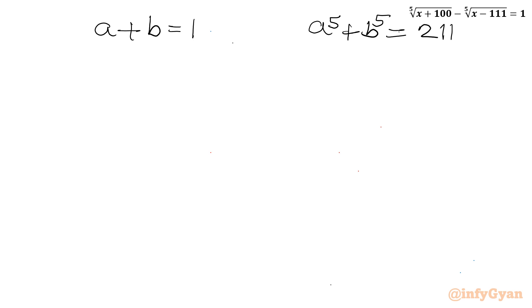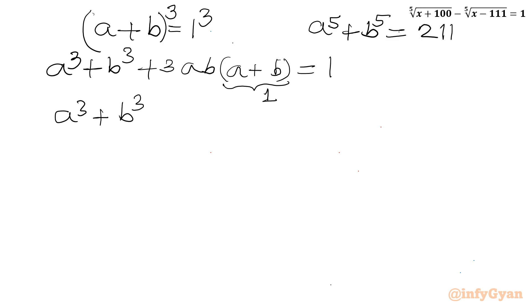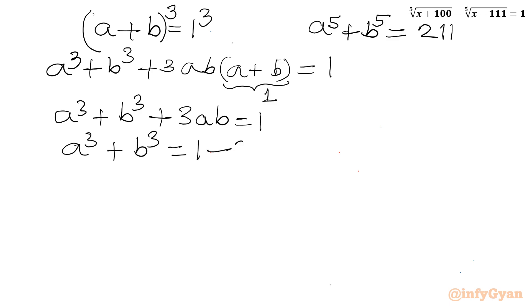Now I will consider cubing of the first equation. So (A + B)³ equals 1 cubed. Applying the algebraic formula: A³ + B³ + 3AB(A + B) equals 1. Since A plus B equals 1, this simplifies to A³ + B³ + 3AB equals 1, or A³ + B³ equals 1 minus 3AB. I will use this equation a little later.